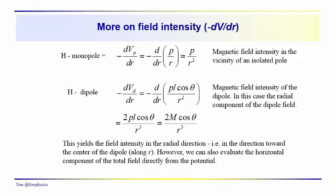Let's talk a little bit more about field intensity. Remember that the field intensity can be obtained by taking the negative derivative of the potential, and we took the derivative with respect to the radial direction.